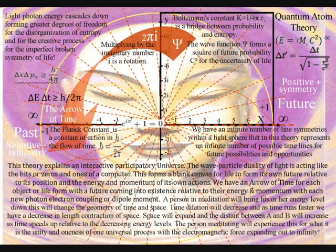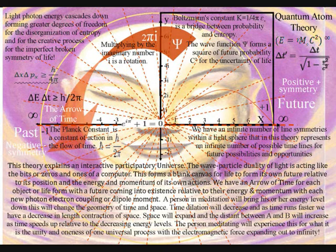A person in meditation will bring his or her energy levels down. This will change the geometry of time and space. Time dilation will decrease, and as time runs faster, we have a decrease in length contraction of space. Space will expand and the distance between A and B will increase as time speeds up relative to the decreasing energy levels.